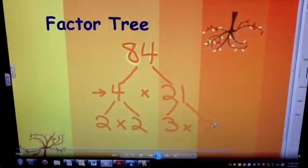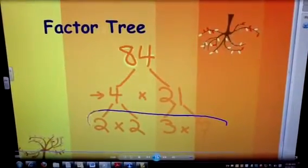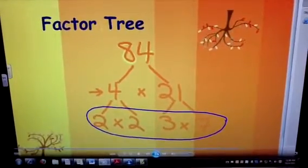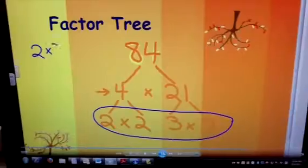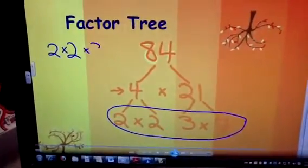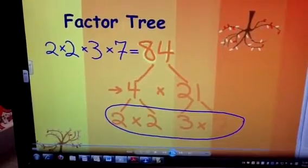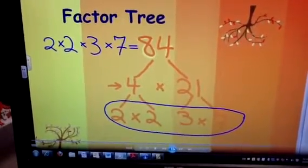Now we have all four numbers in their prime form. And when you write this as 2 times 2 times 3 times 7, the product is equal to 84. This is called prime factorization.